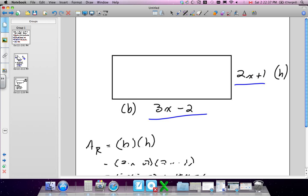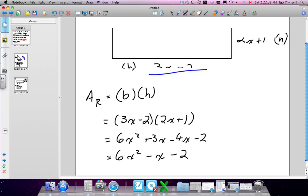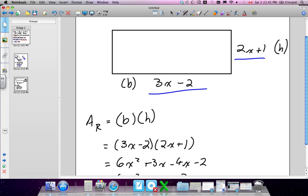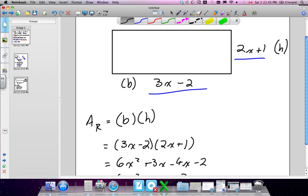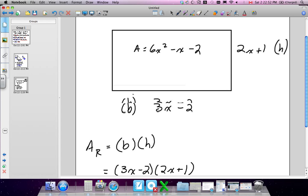The question gave you these dimensions for a rectangle. The height was 2x plus 1, the base was 3x minus 2. We needed the area of this rectangle. Area was equal to 6x squared minus x minus 2. That's what we found.